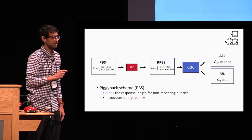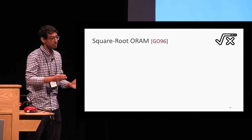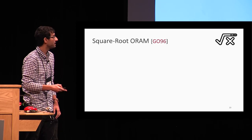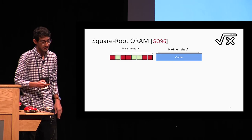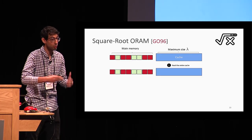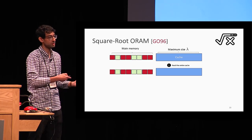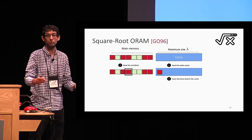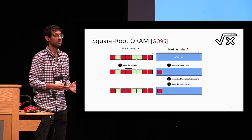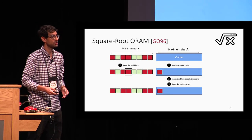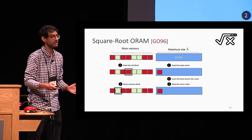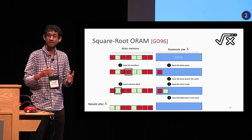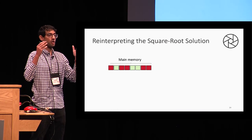Our approach to suppression was inspired by and based on the square root ORAM solution by Goldreich and Ostrovsky. We have a main memory and a cache that can hold up to lambda elements. Whenever the user wants to access an element, it always starts by reading the entire cache. If the element doesn't exist, it goes to main memory, accesses the real element, and inserts it back in the cache. If the user wants to access the same element again, it reads the cache entirely, finds the element there, accesses a dummy element in main memory, and inserts it back in the cache. After lambda accesses, the main memory is reshuffled and the cache is emptied.